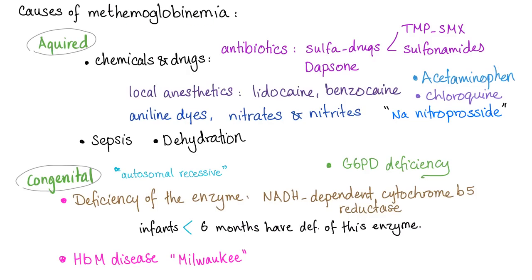Causes of methemoglobinemia: acquired — chemicals and drugs, including antibiotics such as sulfa drugs (TMP-SMX, sulfonamides), local anesthetics (lidocaine, benzocaine), some NSAIDs (acetaminophen/Tylenol), aniline dyes, nitrates, nitrites, sodium nitroprusside, sepsis, and dehydration. Congenital — autosomal recessive deficiency of NADH-dependent cytochrome B5 methemoglobin reductase. Infants under six months are more susceptible due to enzyme deficiency. G6PD deficiency also causes this. Hemoglobin M disease (Milwaukee disease) is another congenital cause.